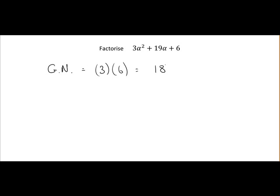Next we mark out the factors of 18. So 1 and 18. We also have -1 by -18, 2 by 9, similarly -2 by -9, 3 by 6, and -3 by -6.